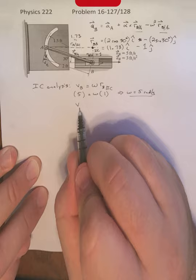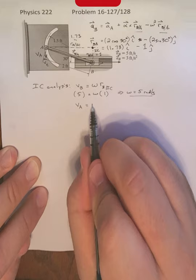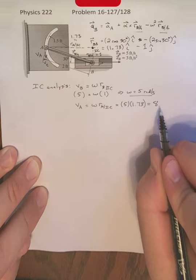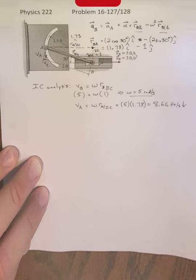Then we can find out what is this velocity at point A. So this is V sub A here. That is going to be omega times rA/IC. And we know that this is 5. We know that this is 1.73. So this is going to be equal to 8.66 feet per second. And it is pointing downwards.